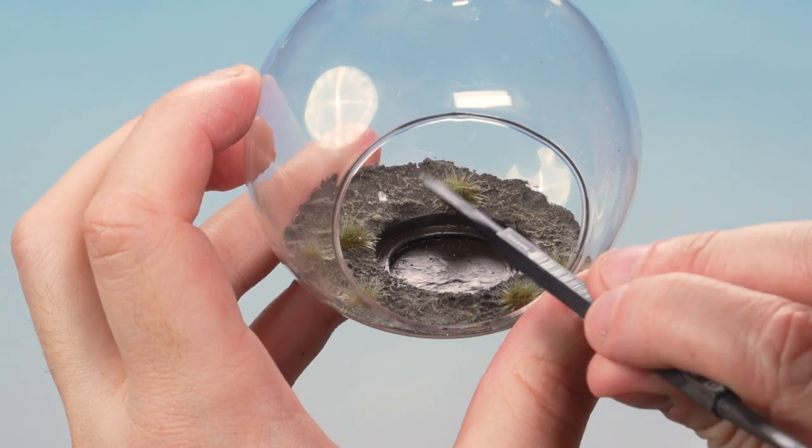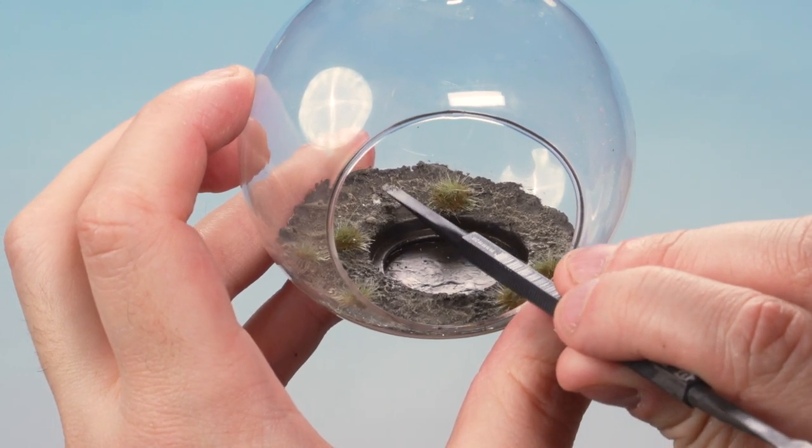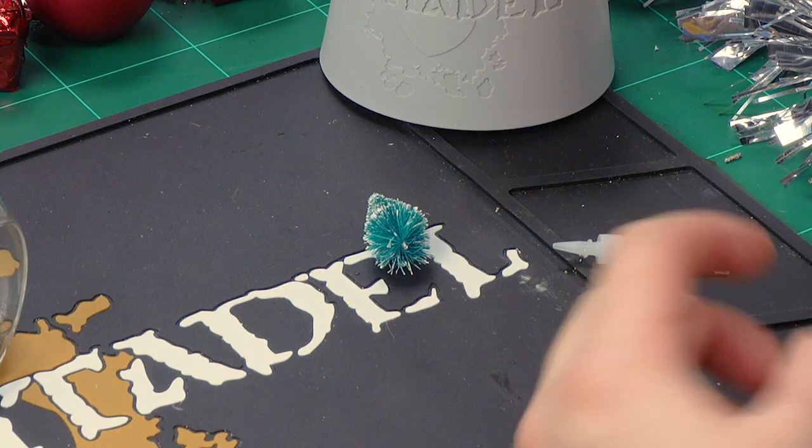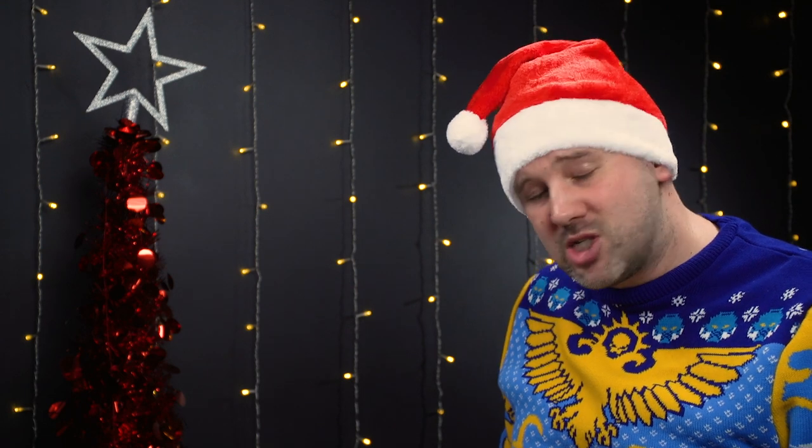There we go, that's the tuft applied. Now you can also see here at the back of the bauble we've actually bored a small hole down into the filler. We used a paper clip to create that. The reason we've done that is so we can now attach a small Christmas tree onto the back of our bauble. This Christmas tree here has come from a local craft shop, the same one we got the bauble from. It comes with a small wire coming out the bottom of it, and we're going to super glue that wire now into the hole we've just made.